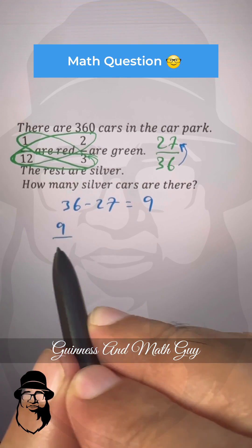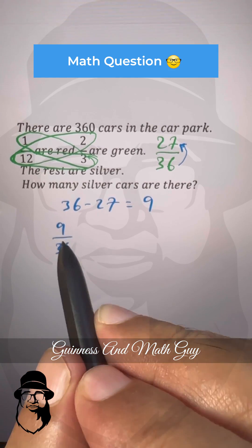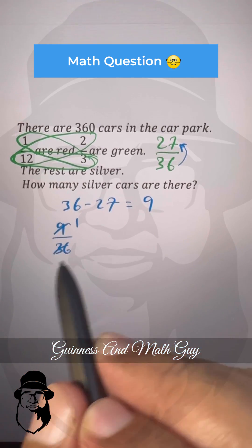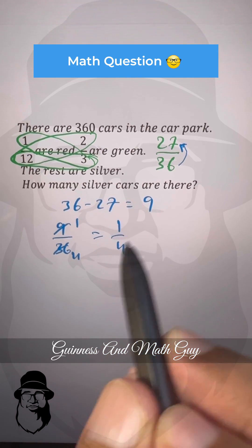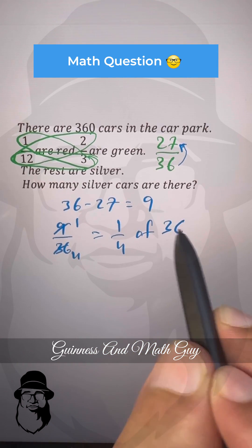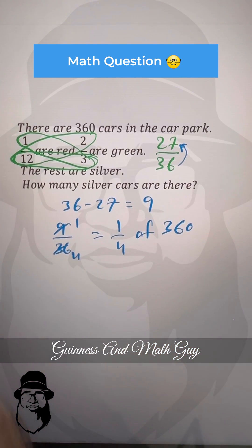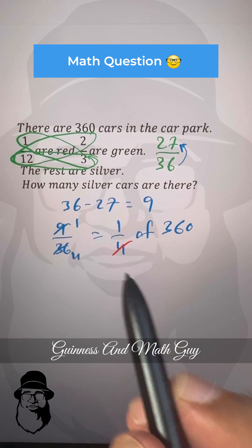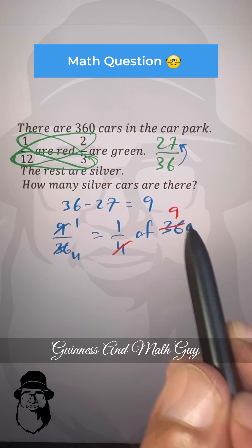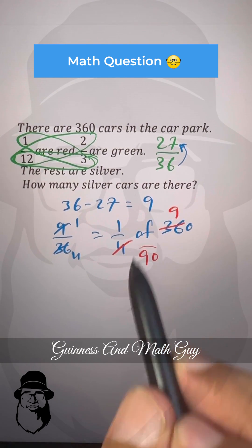And 9 over 36, this fraction, that is 1/4th. We can say that 1/4th of 360 are silver. And we can cancel out this. 4 times 9 is 36, so 90 are silver. That's our answer.